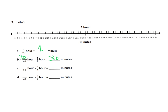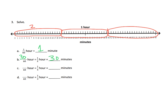Let's do a third of an hour. You're going to take your 60 minutes — that's an hour — and chop it up into three equal sized pieces. If you do that, it's going to be 20 minutes in each section: 20 plus 20 plus 20. So a third of an hour is 20 minutes, which is 20 sixtieths of an hour.